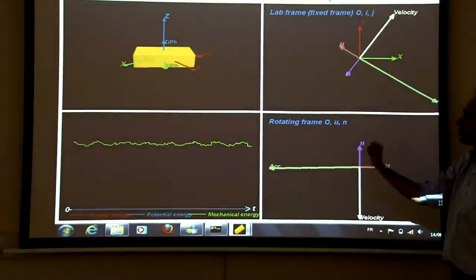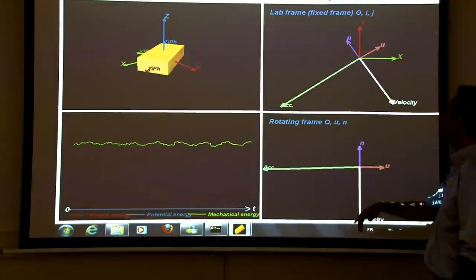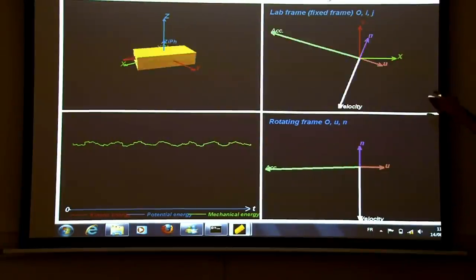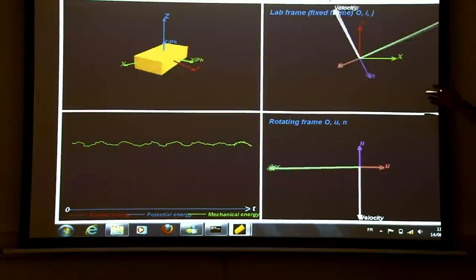What you have here in four screens is orientation in space, description in the lab frame where you see velocity vector, acceleration vector in polar coordinates.